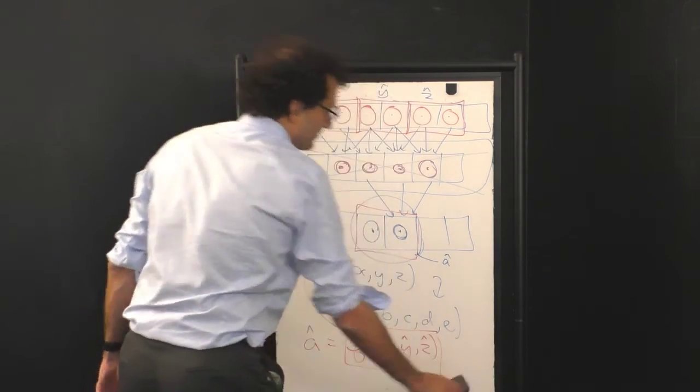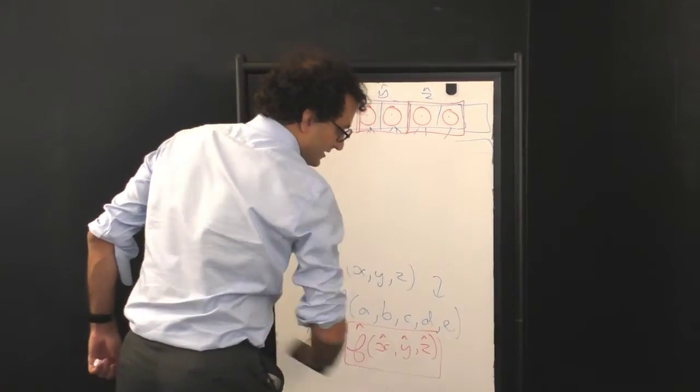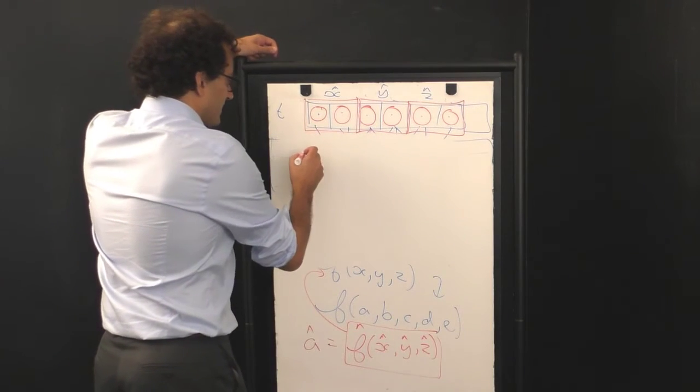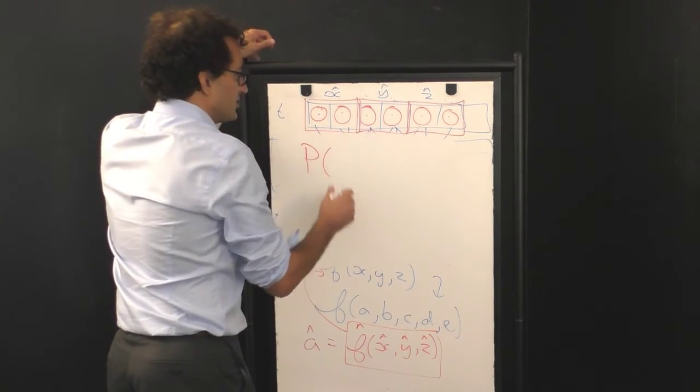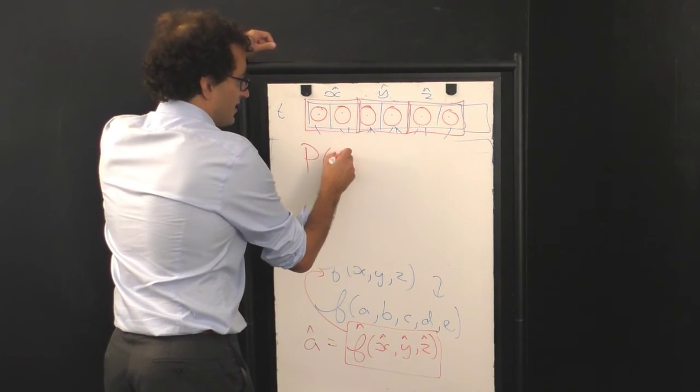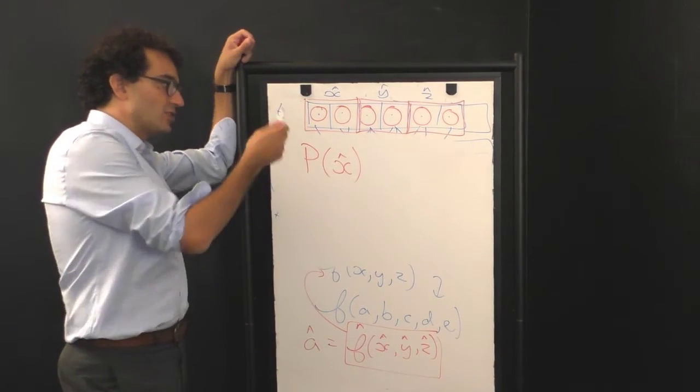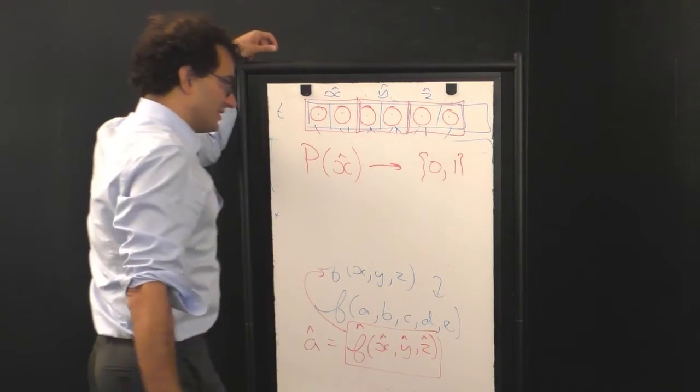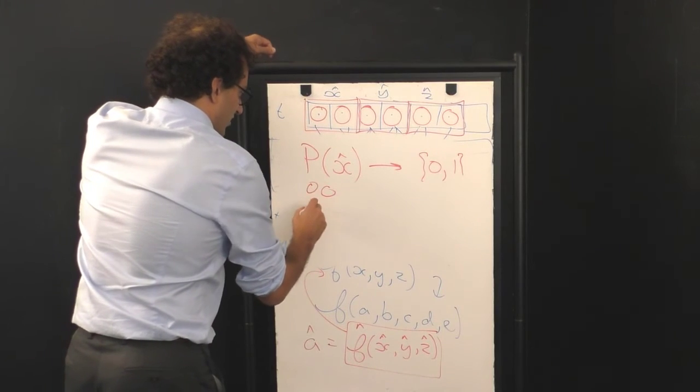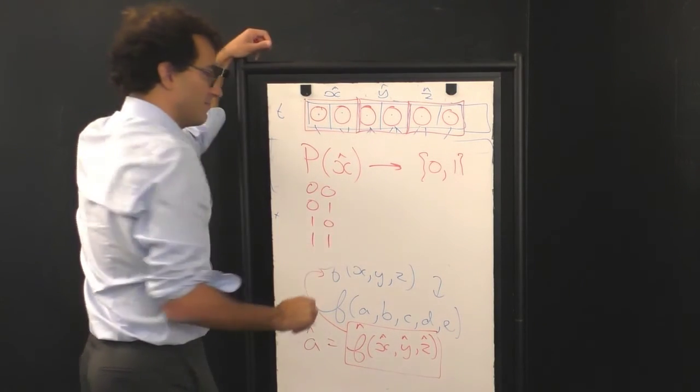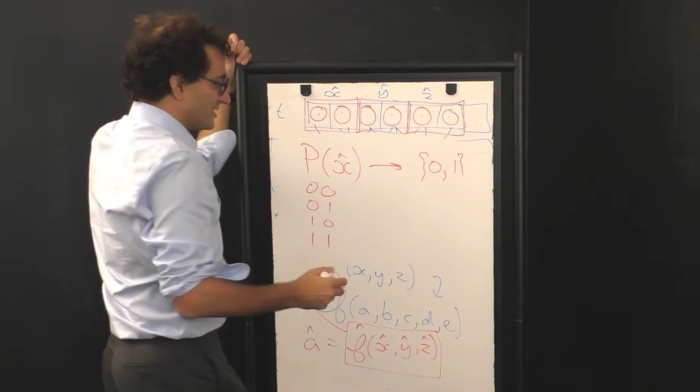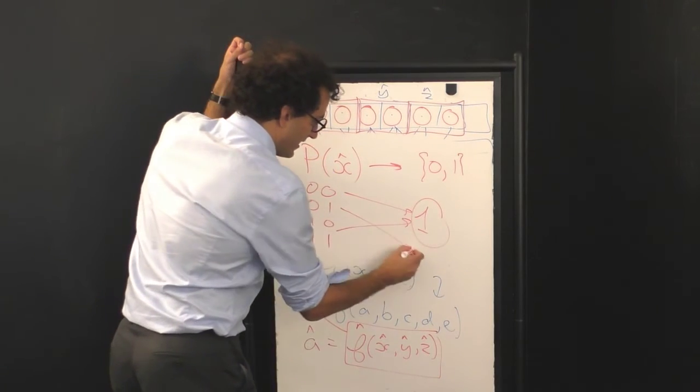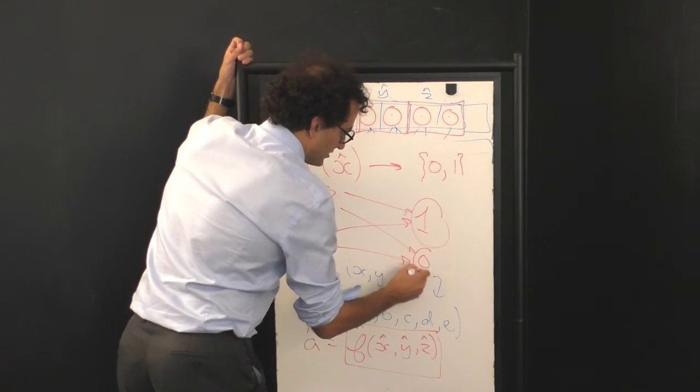So what do we do? Well, instead of coarse graining just in time, we can also coarse grain in space. And what they introduced was a projection operator P. And so what P does is it takes a supercell, it takes the state of a supercell, and maps it to a binary variable zero or one. So explicitly there are four possible states the supercell can be in. And what the projection operator does is it maps some of them to, let's say, the one state, and it maps the rest of them to the zero state.